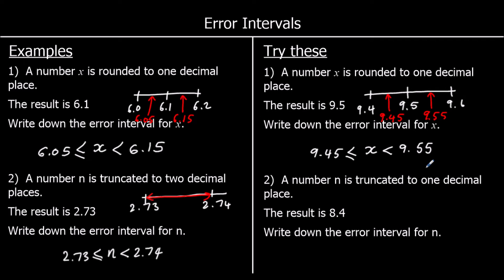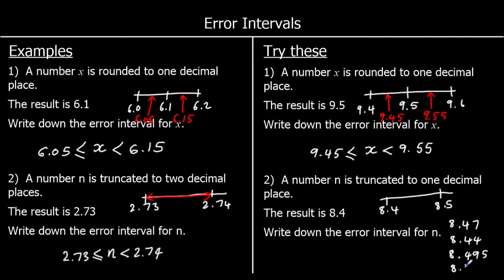And the second one: a number n is truncated to one decimal place, the answer is 8.4. So it's been cut off after one decimal place. It started with 8.4 and then could have had any numbers after it. Truncated just means it's been cut off after one decimal place. So it's anything in between 8.4 and 8.5 — bigger or equal to 8.4 and less than 8.5.